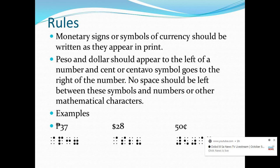So here we have 37 pesos. In Nemeth Braille, we write dot 4 on the first cell, letter P on the second cell — and there should be no space — then we write digits 3 and 7 after letter P. Next is $28. So in Nemeth Braille code, we write dot 4 on the first cell, letter S, then digits 2 and 8 on the next cells.